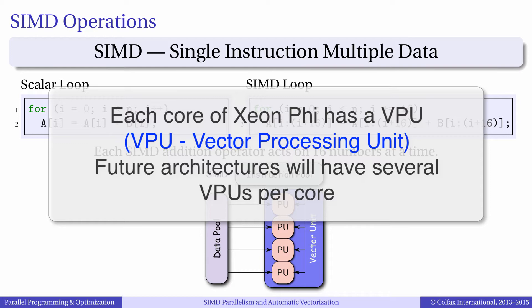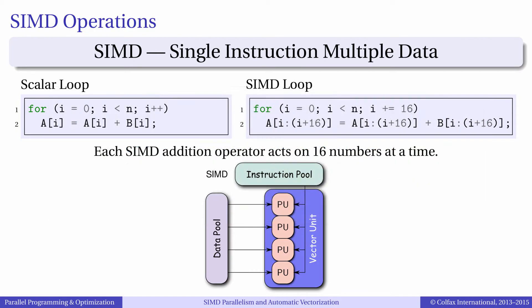Earlier in the course we mentioned that automatic vectorization in the context of Intel processor architectures is synonymous with SIMD processing. SIMD is a class of parallel operations in Flynn's taxonomy and it stands for Single Instruction Multiple Data.